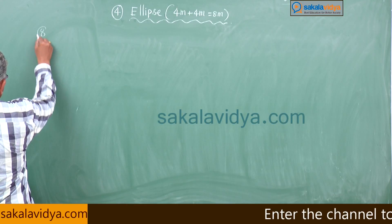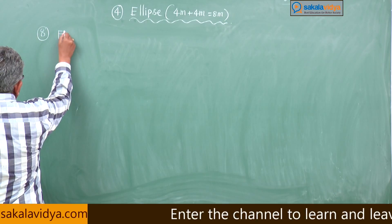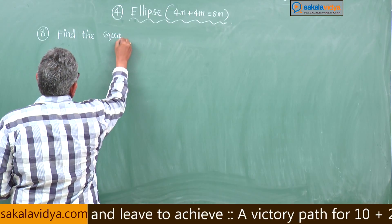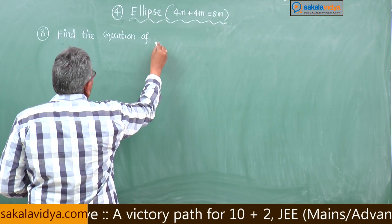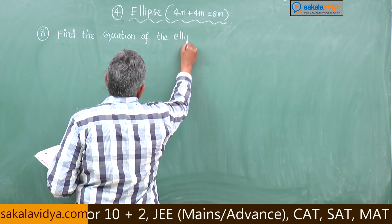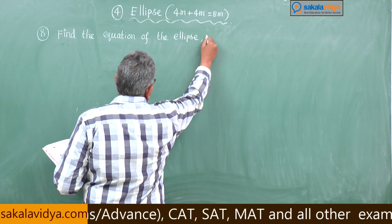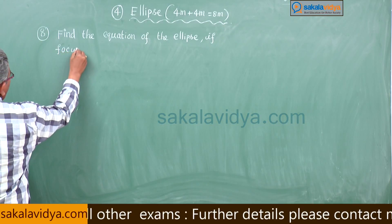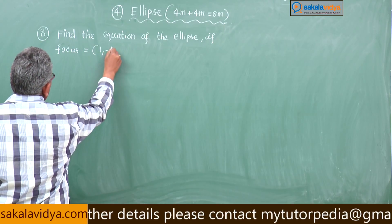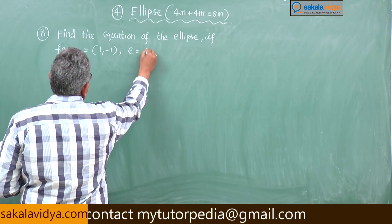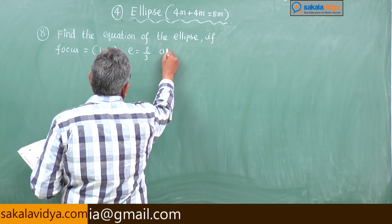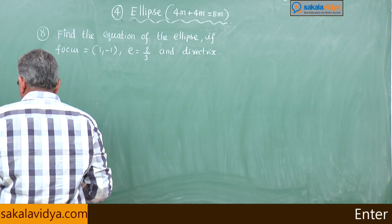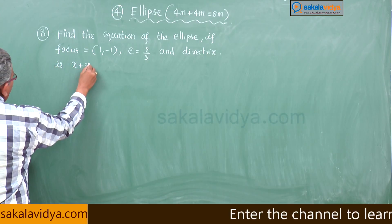Eighth problem: find the equation of the ellipse. Given: focus is equal to (1, -1), eccentricity E is equal to 2/3, and directrix is x plus y plus 2 is equal to 0.